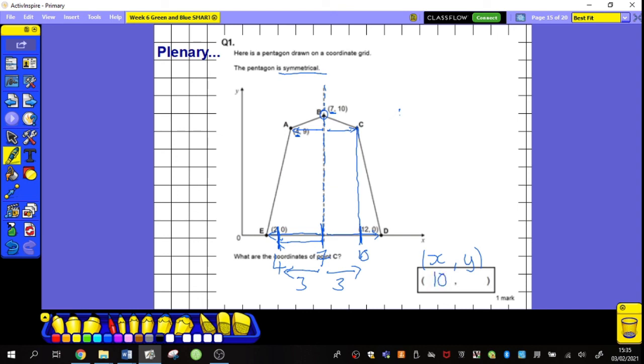Now, let's figure out how high it is. So, C is in line with A, and A I can see is 9 high there. I can see C is in line with it, so 10, 9 must be my answer.